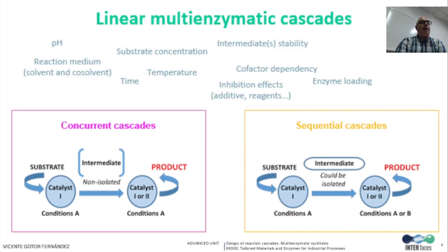Before developing a cascade process, you need to identify active catalysts for each individual step and find the best conditions in terms of pH, reaction medium, temperature, substrate concentration, and cofactor dependency. Once individual transformations are feasible, efforts need to be made to implement both transformations in the same pot, which sometimes requires re-examining the parameters previously studied and exploring potential inhibition of catalysts due to the presence of reactants, intermediates, or by-products. Some examples are here provided to make this clear.